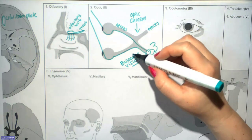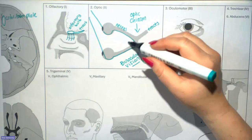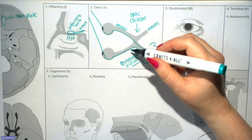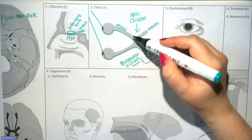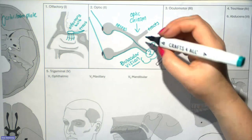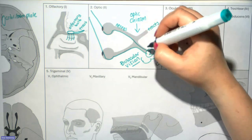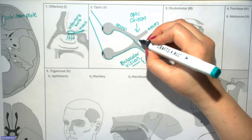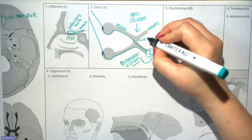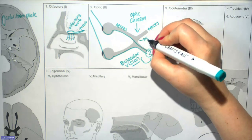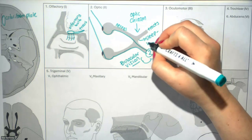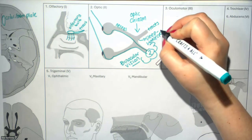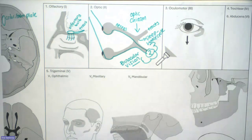Some aspects of the information coming in through these nerves also feeds back to other systems in the brain, such as our sleep-wake cycle. So it's not just important for vision.